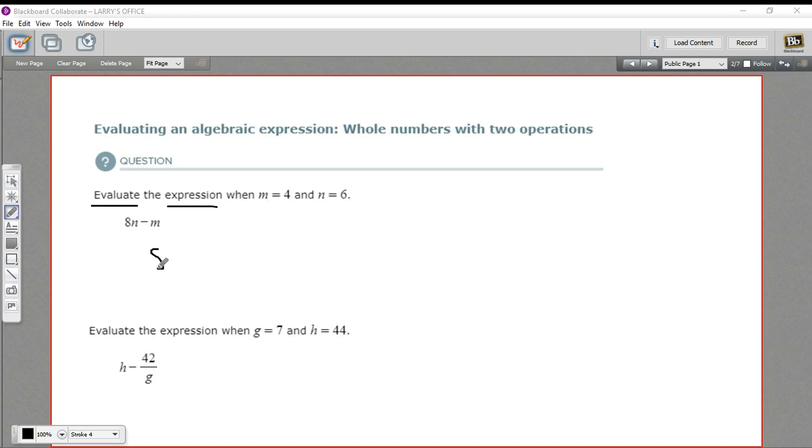So we've got our 8, and then for the n, I'm going to put in 6 and remind myself that this means multiplication when they're right next to each other. And then I've got a minus sign, and then we've got 4, which goes in place of m. So there's our problem.